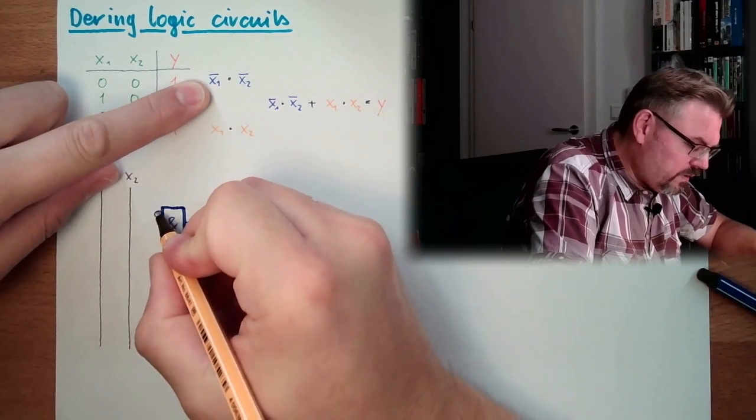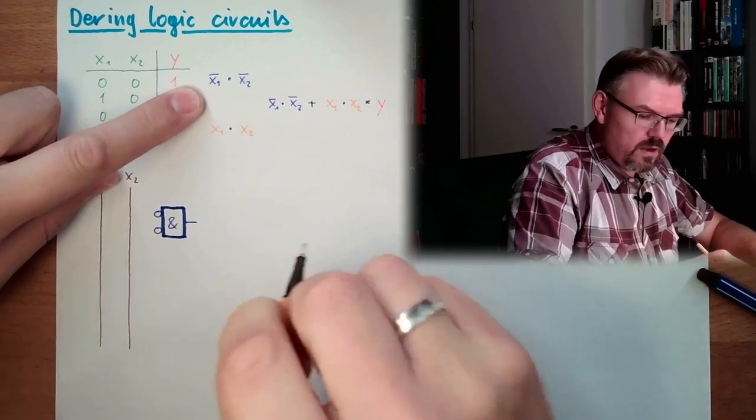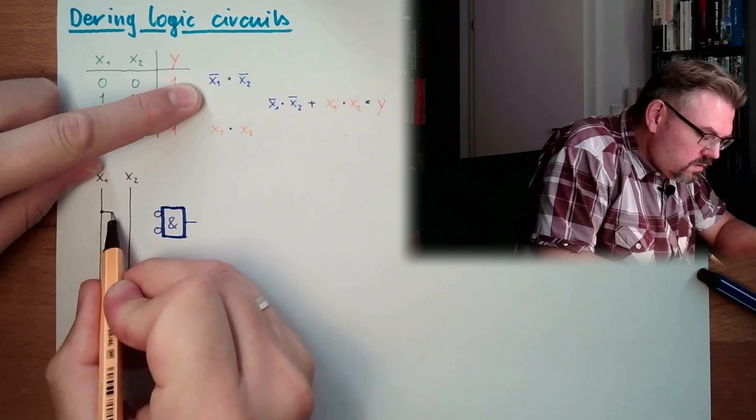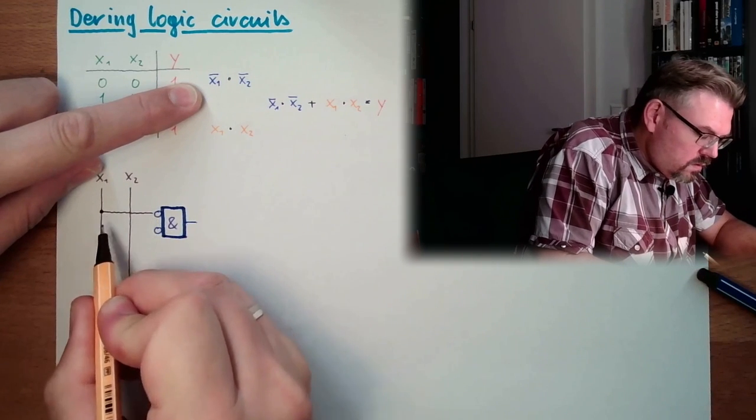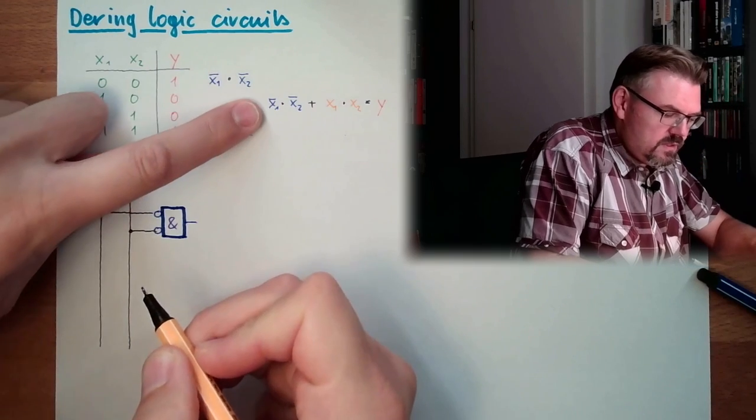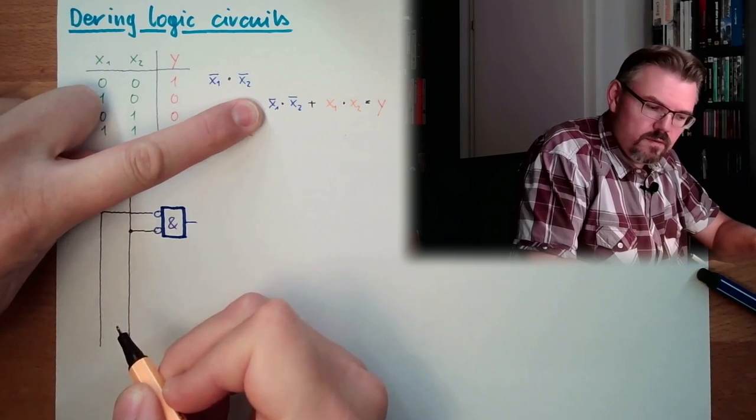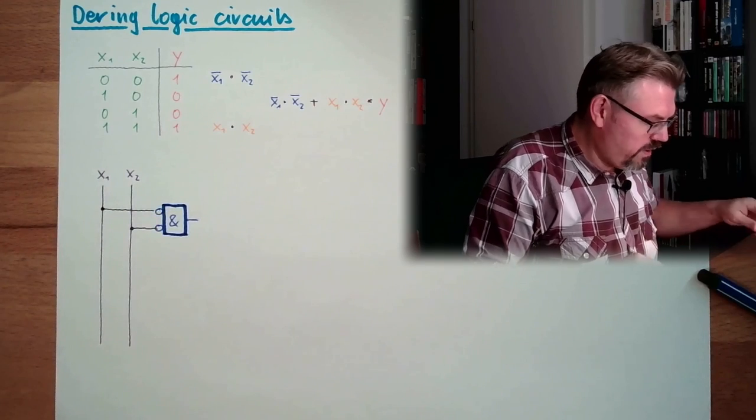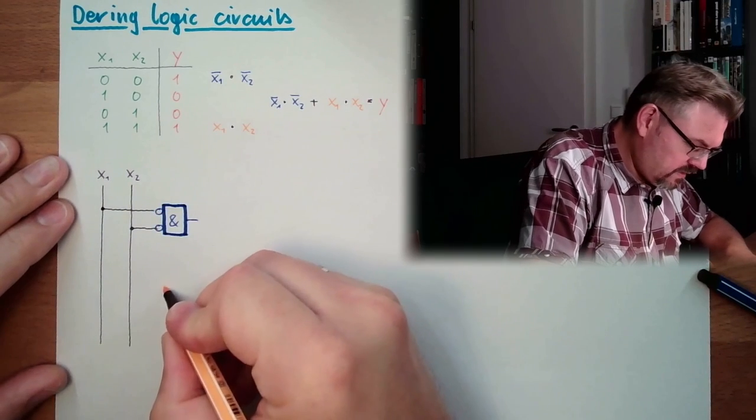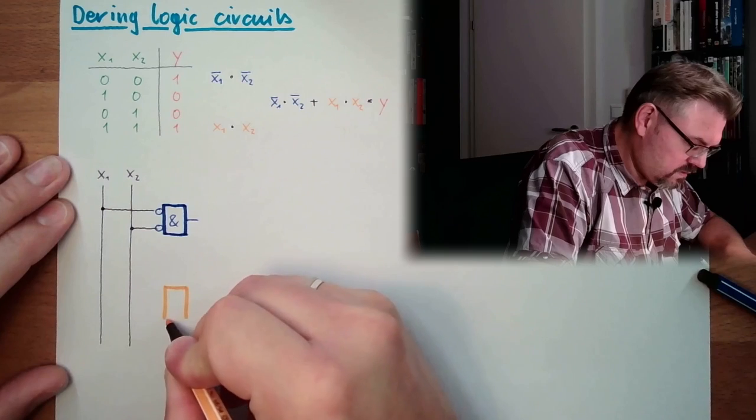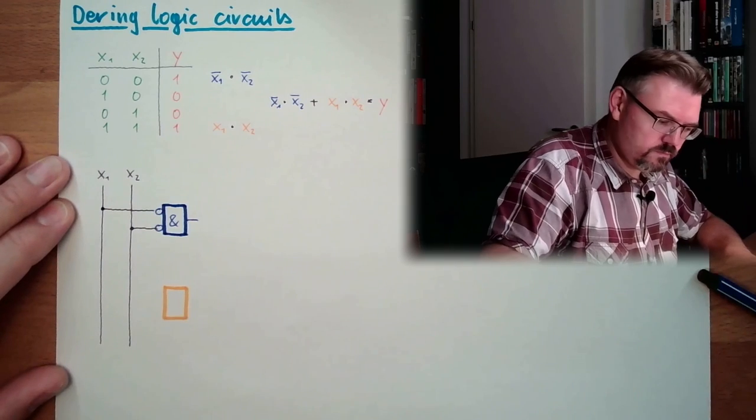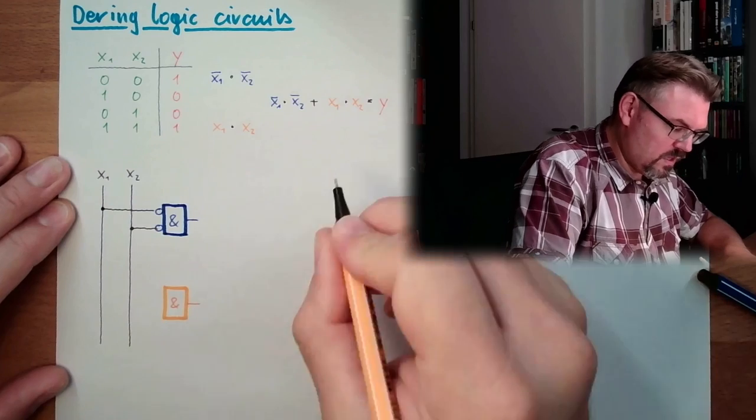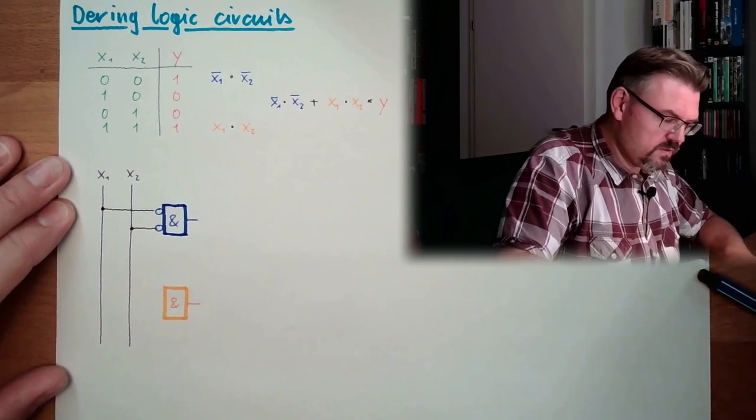With one output. And the two inputs are inverted. And we have NOT x1. And not x2. This is this one. All right? We need this one as well. So the orange one. We need an AND. The inputs are NOT inverted.